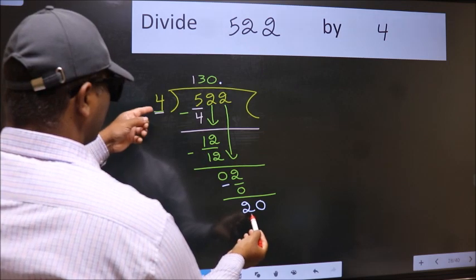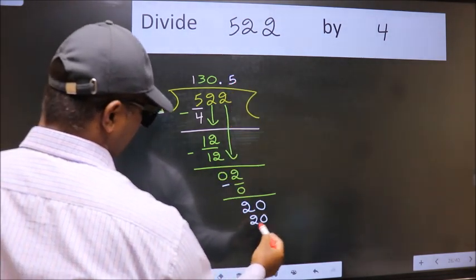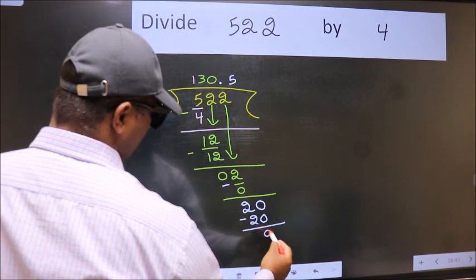When do we get 20 in the 4 table? 4 times 5 is 20. Now we subtract. We get 0.